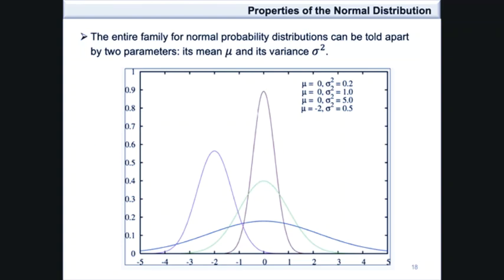As can be seen, the value of μ indicates the point of symmetry on the x-axis for each distribution. The red, the green, and the blue graphs are centered at 0 because their μ values are equal to 0. The pink graph, however, is centered around negative 2 since its μ value is equal to negative 2.